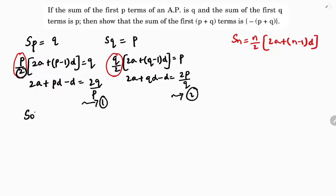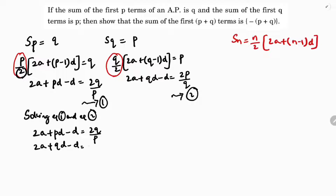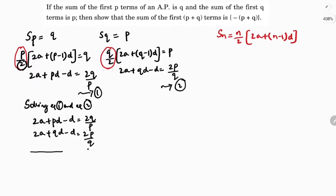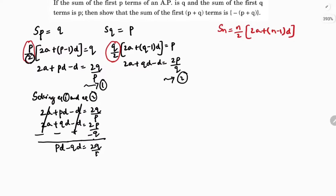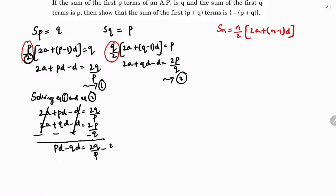Solving equation 1 and equation 2: equation 1 is 2A plus PD minus D equals 2Q by P, and equation 2 is 2A plus QD minus D equals 2P by Q. To eliminate, I subtract equation 2 from equation 1. The 2A terms cancel, and the D terms cancel, leaving PD minus QD equals 2Q by P minus 2P by Q.